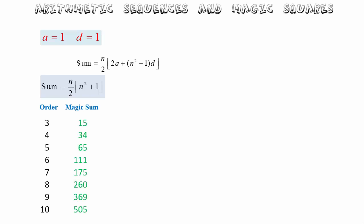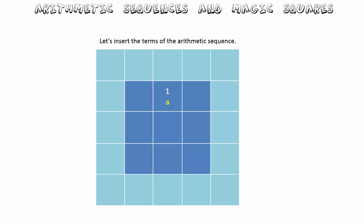Let's apply that formula to a magic square where the first term a equals one and the common difference d equals one — meaning numbers starting at one going up by one. Substituting into our formula, the magic sum simplifies to n over 2 times bracket n-squared plus 1. Using this for magic squares of order three through ten, we see that for order three the magic sum is 15, for order four it is 34, and so on.